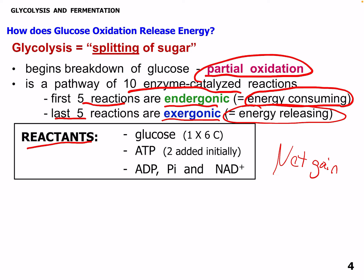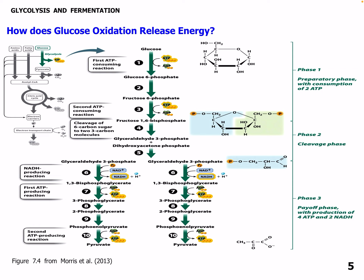The reactants of glycolysis are one glucose molecule with six carbons. We need two ATP added initially — that's our investment up front. We also need ADP, inorganic phosphate, and NAD+, which is that carrier that will help form ATP. Here's a big overview picture of glycolysis, which we won't go into too much detail on as this will be saved for biochemistry. But even here we can see the citric acid cycle as well.